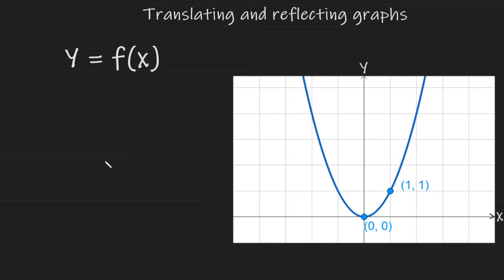Okay, time for our first reflection. I'm going to make the outside of the function, so outside of the brackets, negative. And that looks like this. This now changes the graph to look like this.